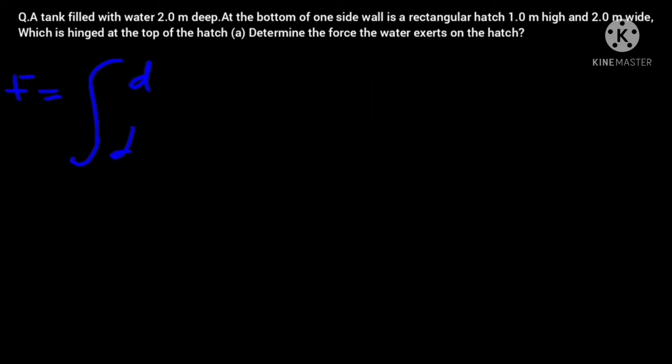The upper limit d, and lower limit d minus h, of ρ times gravity times width times h times dh. So this is equal to ρ times gravity times w or width, because these are constants, right? So they won't change.